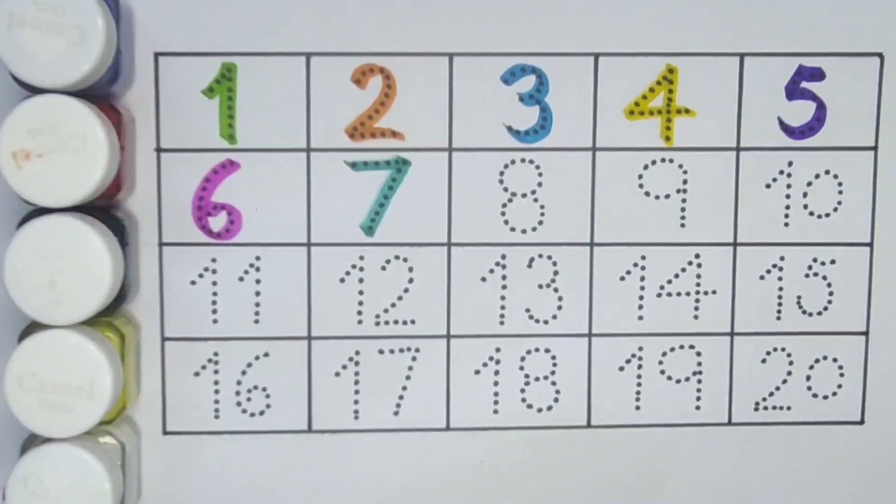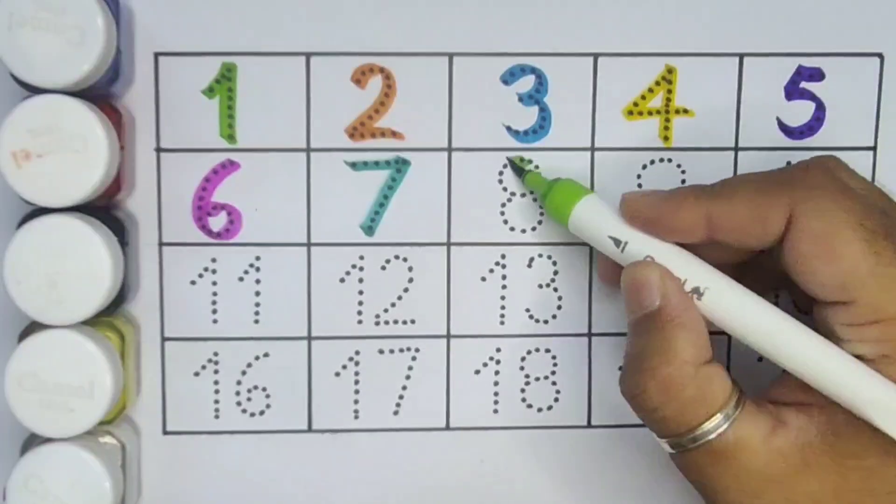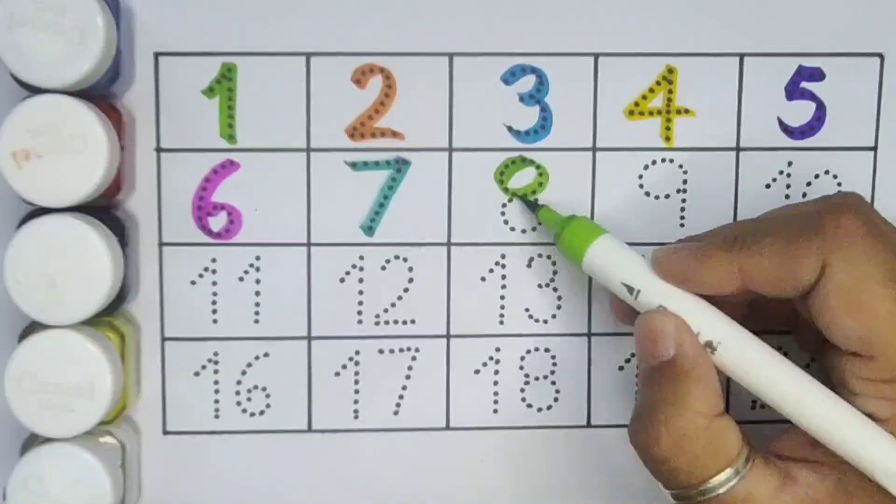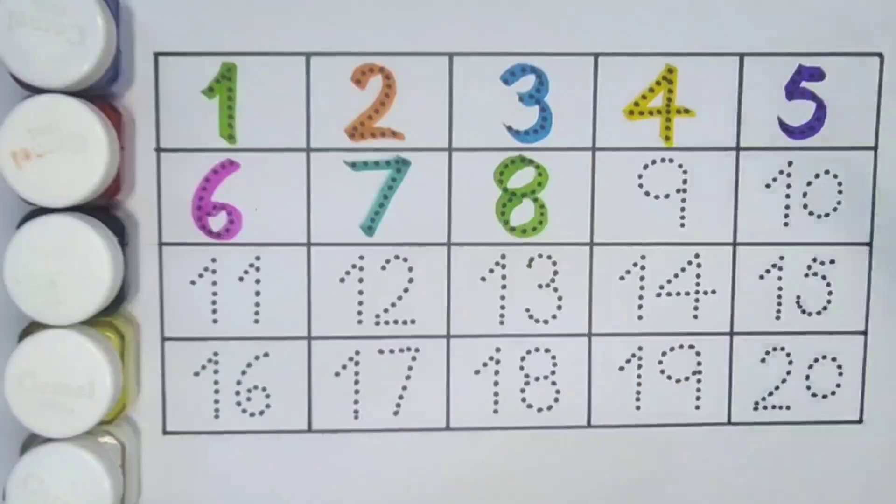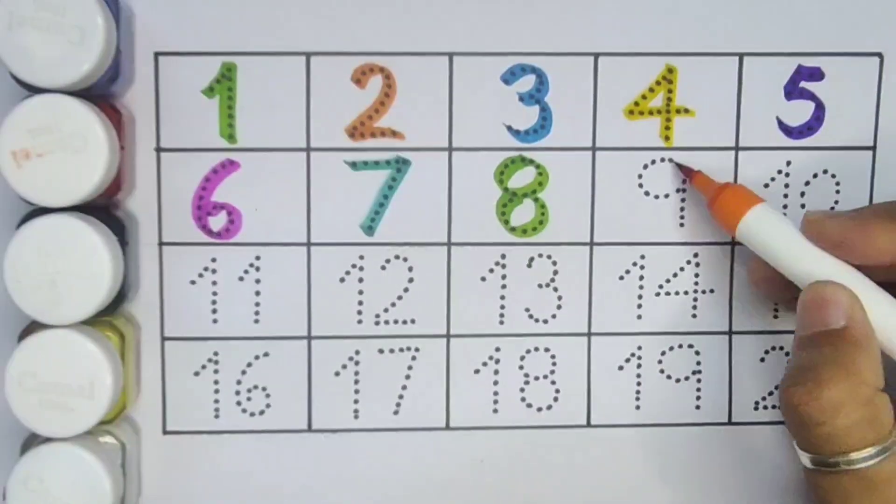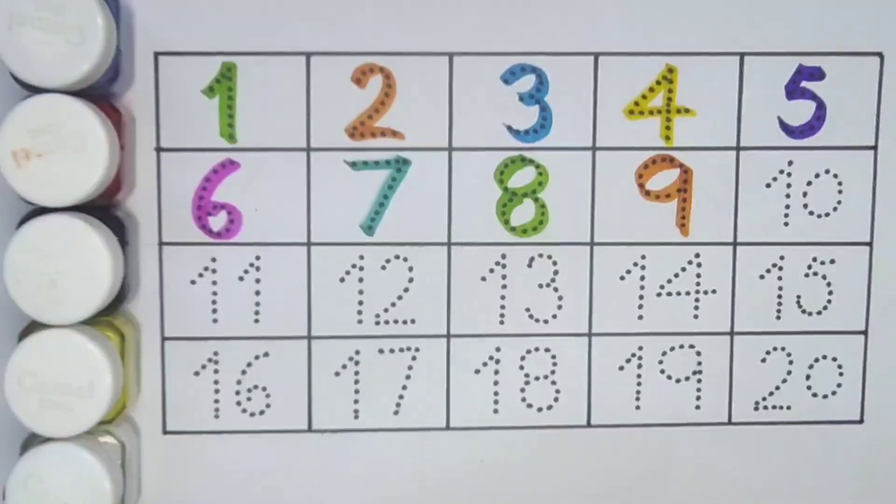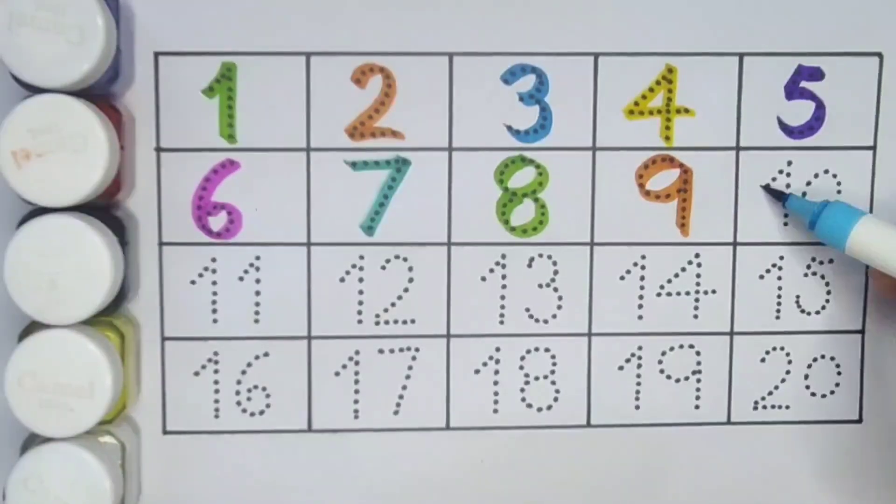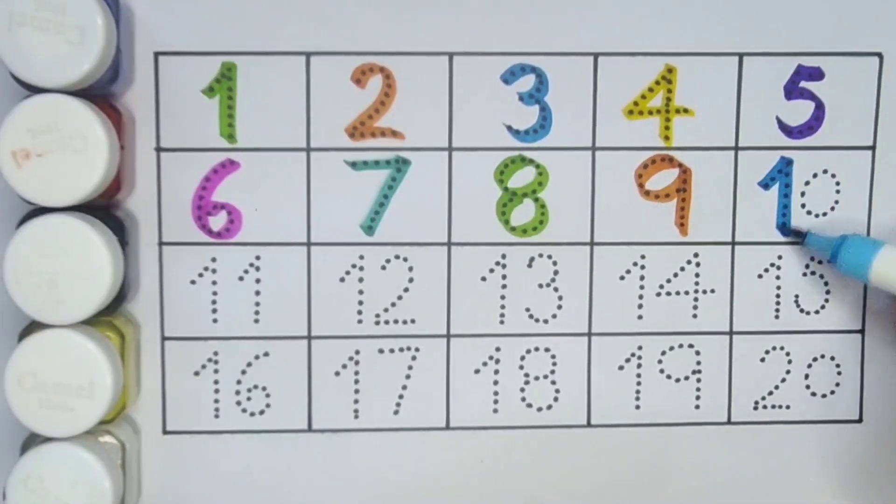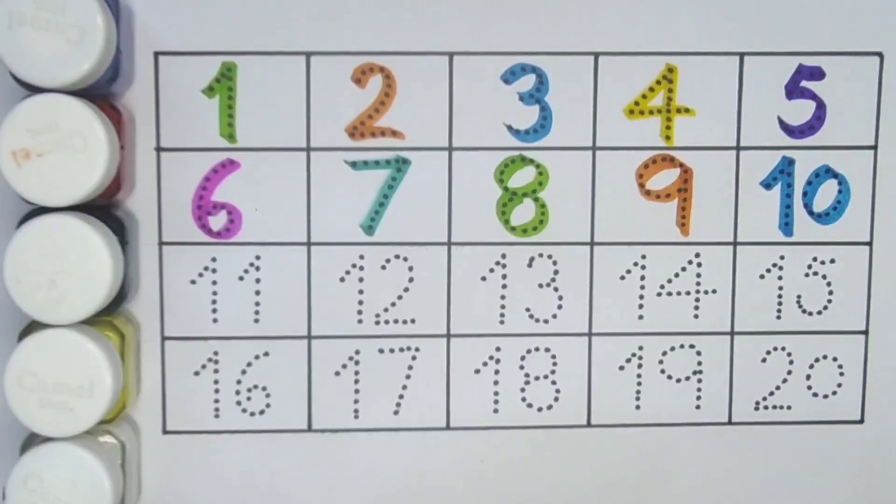Next kids, eight, number eight. Next kids, nine, number nine. Next kids, ten, one zero, ten, number ten.